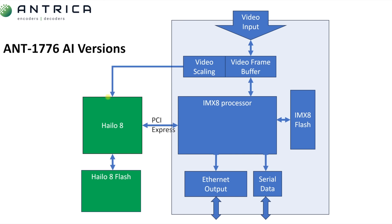The Halo 8 is a chip produced by Hailo. It is probably the most powerful AI accelerator processor on the market based on power, size, and performance. There are more powerful AI accelerators but they tend to be much bigger and draw significantly more power. We needed a chip that was physically very small, and the Halo 8 fits that perfectly. The Halo 8 flash is where the program for the Halo 8 resides and it performs whatever AI function has been programmed.